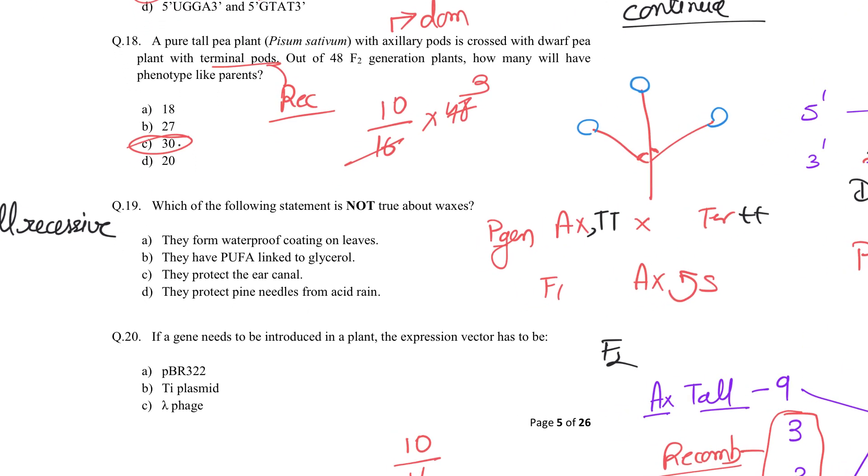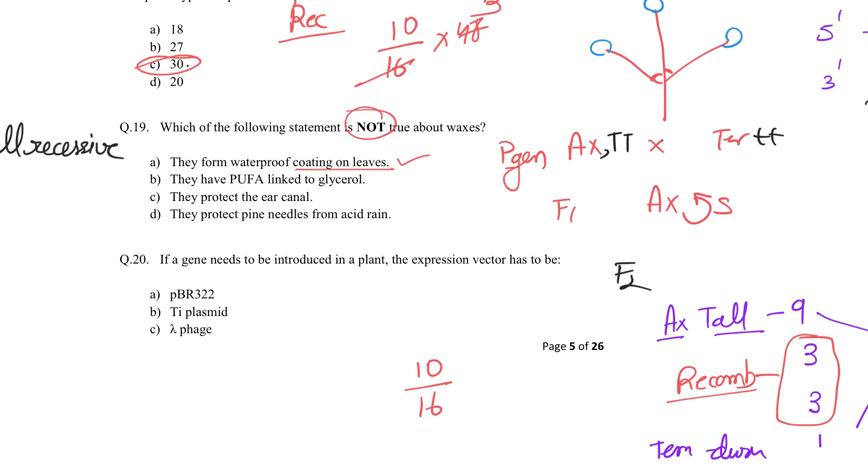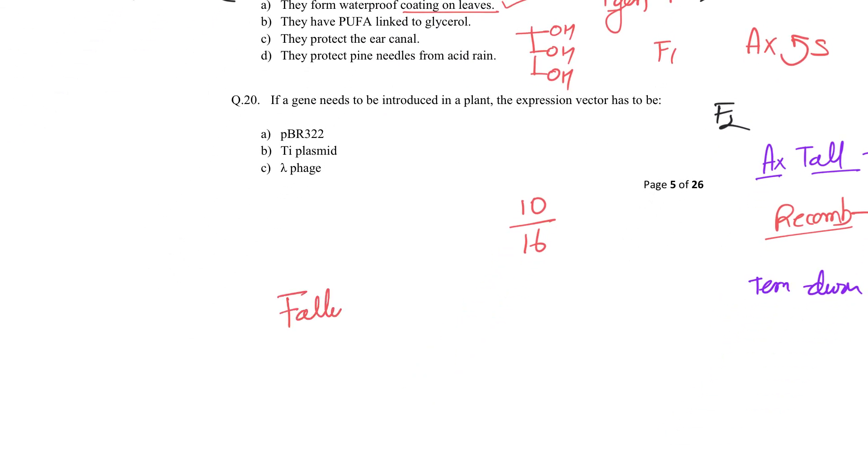Question 19: Which of the following is NOT true about waxes? Waxes are generally lipid molecules. They form waterproof coating because lipids are hydrophobic - absolutely correct. You need to find NOT true. They have PUFA linked to glycerol. What is glycerol? It's an alcohol with three OH groups. What is PUFA? Polyunsaturated fatty acid.